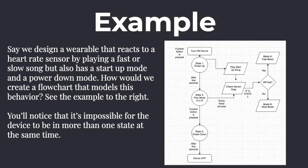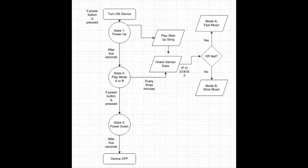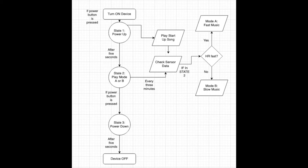Here we can see a flowchart that walks us through our states, with transitions written where lines go from one state to the next. We have a state for startup, a state for play mode, and a state for power down. In startup, we take a reading from our sensor and play our startup sound. After five seconds we enter play mode, taking sensor readings at regular intervals and outputting different music if the sensor data has changed. Finally, a power down state plays the power down sound when the power button is pressed, continuing for five seconds.